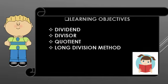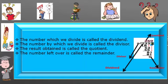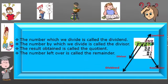Today we are going to discuss what is dividend, what is divisor, what is quotient, and how to do division using the long division method. The number which we divide is called the dividend. As you can see here, 2333 is given as the dividend. The number by which we divide is the divisor — here 9 is the divisor. The result obtained is called the quotient; here 259 is the quotient. The number left after division is 0, so 0 is called the remainder.